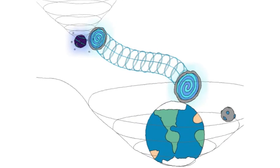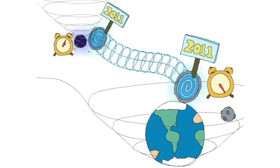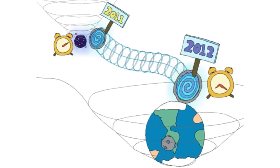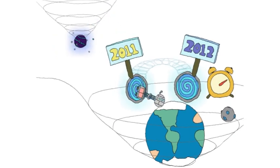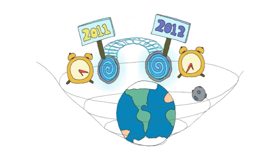Say you set up a wormhole so that both ends start in 2011. After a year on Earth, only a few minutes will have passed near the black hole. If you then drag the slower end back to Earth, time will flow at the normal rate, but will be offset by a year.